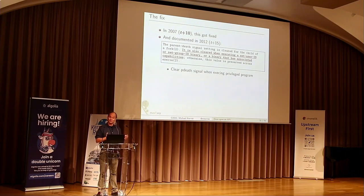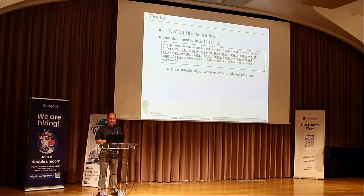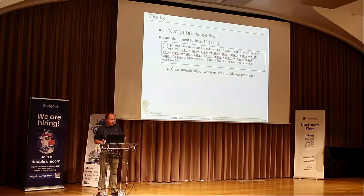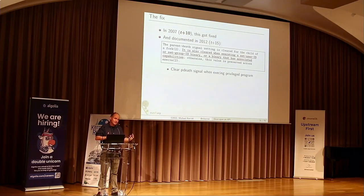The fix was: if the child execs a setUID program, or a program that gains privilege by having capabilities, then the parent death signal setting gets cleared. Now the manual page documents this. The point is, the fix came 10 years after the API appeared, and the documentation came 15 years after — because no one told me, or they told me long after the fact.